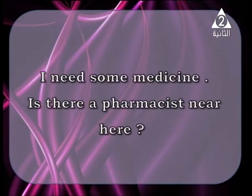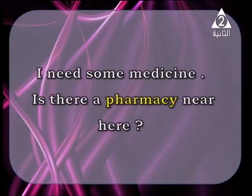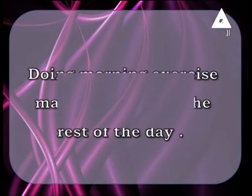جملة تانية: 'I need some medicine. Is there a pharmacist near here?' الخطأ هنا إن المفروض أسأل على المكان، وهو pharmacy اللي هي الصيدلية، وليس pharmacist اللي هو الصيدلاني نفسه. الصح: Is there a pharmacy near here?